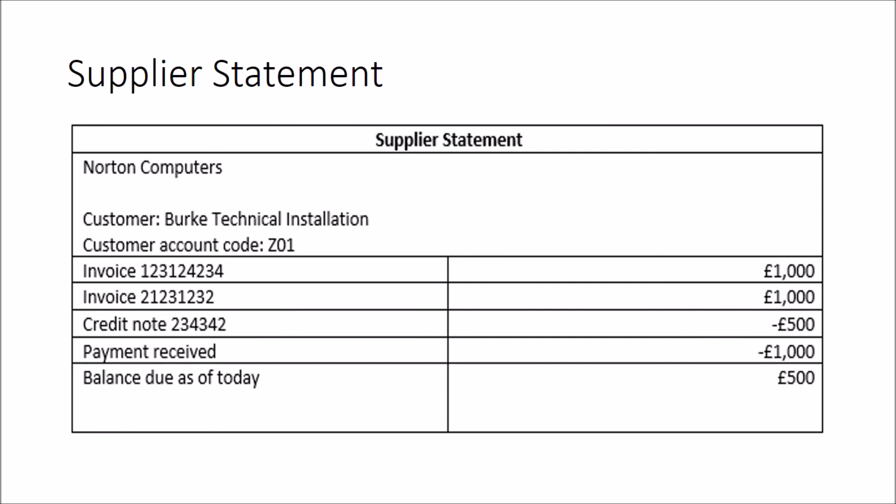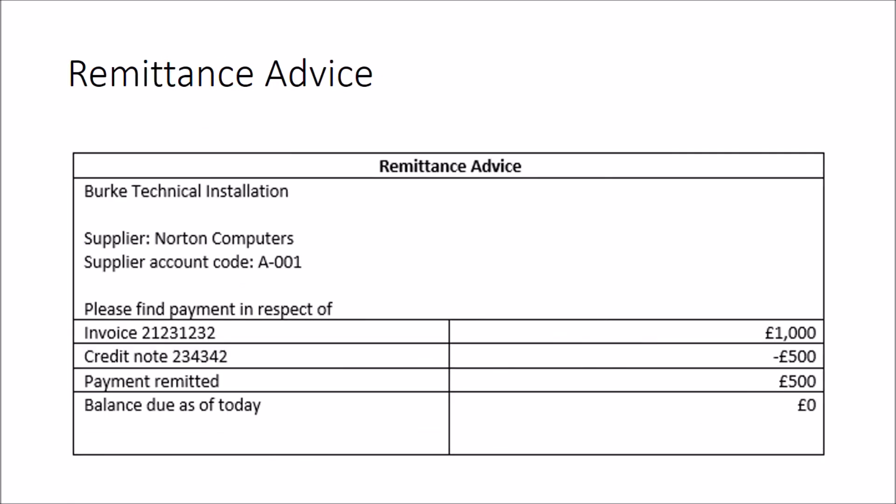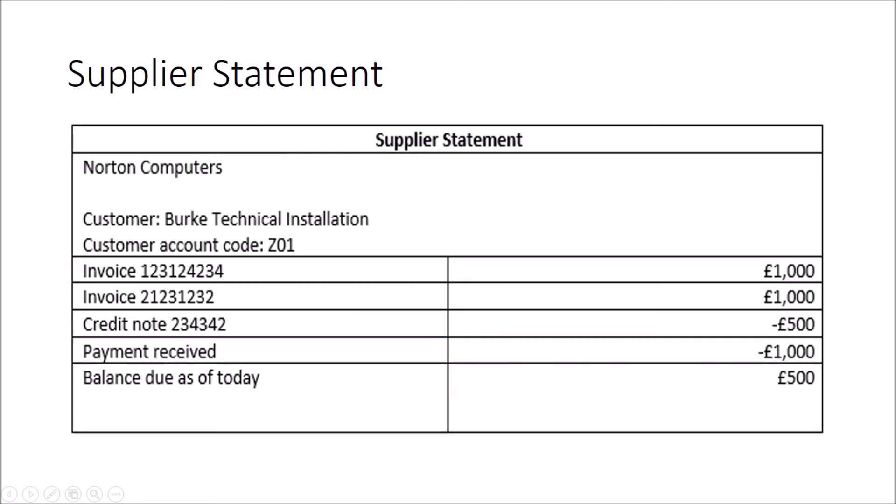The important thing to note is: a remittance advice is from the buyer to the seller — this is what I've paid. And a supplier statement is from the seller to the buyer — this is what you owe.